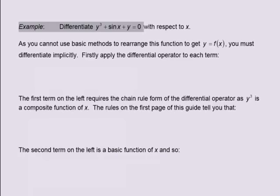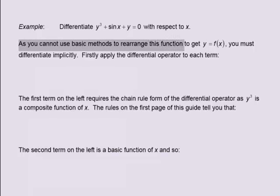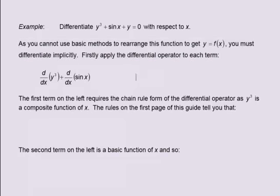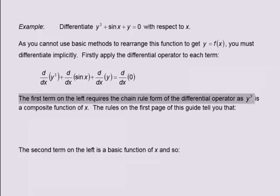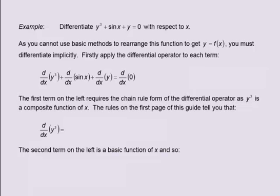Consider differentiating y cubed plus sin x plus y equals zero with respect to x. As you cannot use basic methods to rearrange this function to get y equals f of x, you must differentiate implicitly. Applying the differential operator to each term: d by dx of y cubed, plus d by dx of sin x, plus d by dx of y, equals d by dx of zero. The first term requires the chain rule form of the differential operator as y cubed is a composite function of x. The rules in this guide tell you that d by dx of y cubed equals 3y squared multiplied by dy by dx.